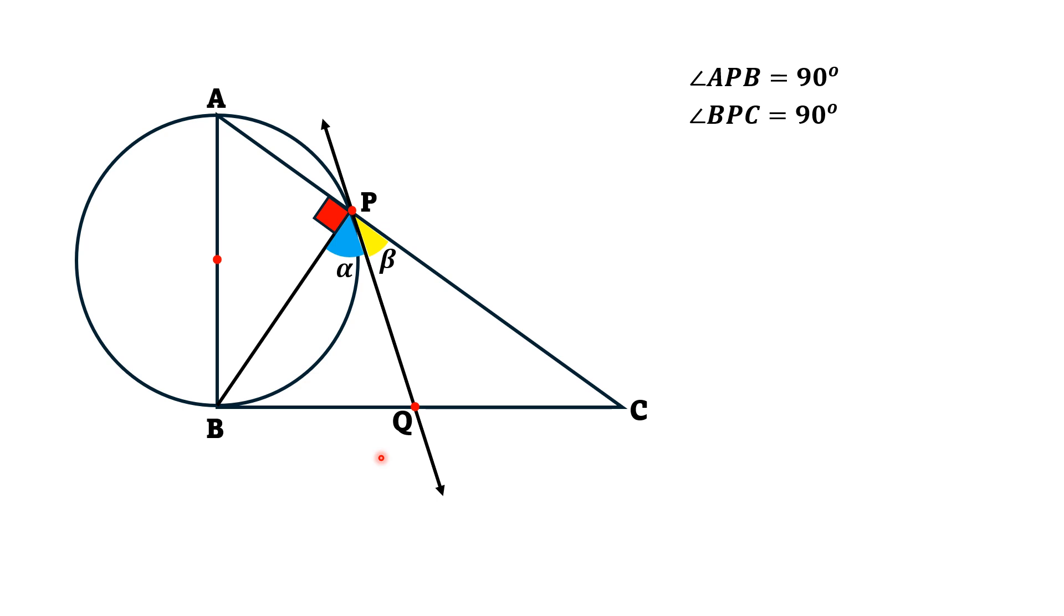Now, let's call the angle BPQ as alpha and QPC as beta. Then, it is very clear that alpha plus beta equals 90 degrees.